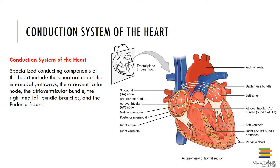Internodal pathways distribute the contractile stimulus to the atrial muscle cells as the impulse travels toward the ventricle. The atrioventricular node, or AV node, is located at the junction between the atria and ventricles and delivers the stimulus to the AV bundle. A 100-millisecond delay occurs at the AV node, giving time for the atria to contract. If the SA node or internodal pathways are damaged, the AV node will generate impulses at a rate of 40 to 60 beats per minute.